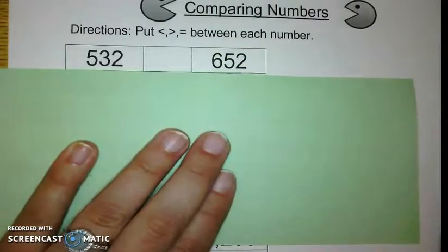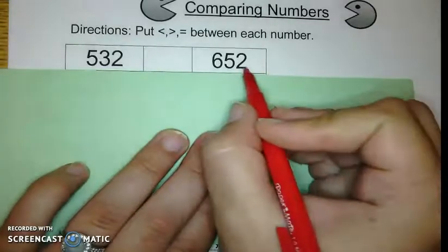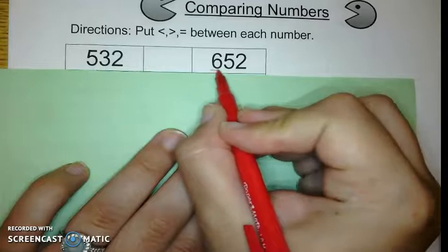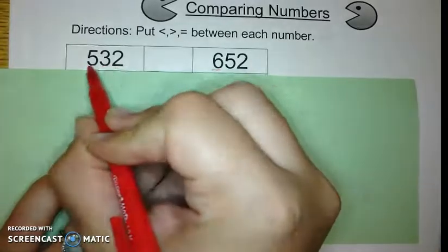And it is 532 compared to 652. The first thing I'm going to do is I'm going to find the highest place value. Ones, tens, hundreds. Ones, tens, hundreds.